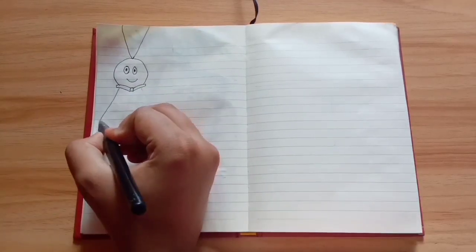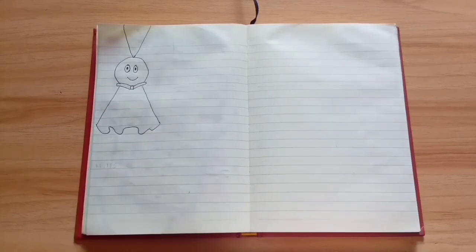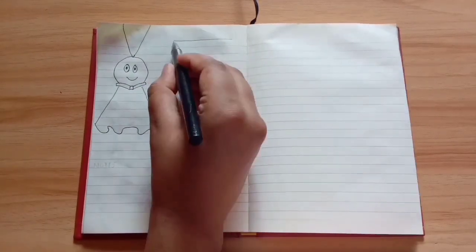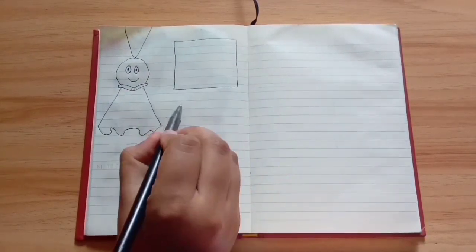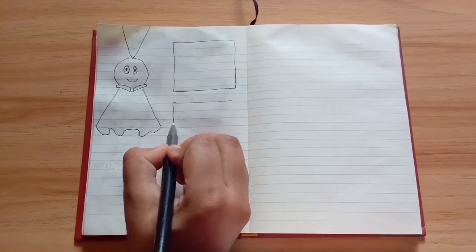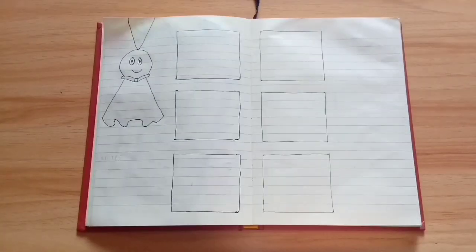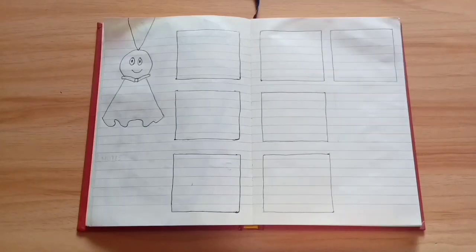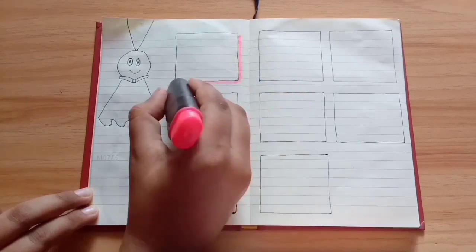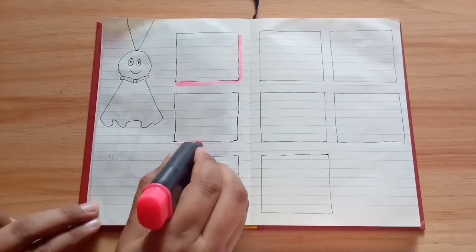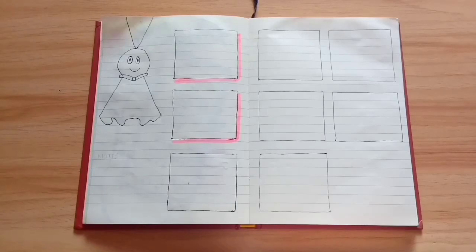For the first weekly spread, I have added a cute little doodle at the left corner of the spread, then I drew some small square boxes for each day of the week. To make it a little more attractive, I have used a highlighter and highlighted the edges. It just makes the spread look prettier.